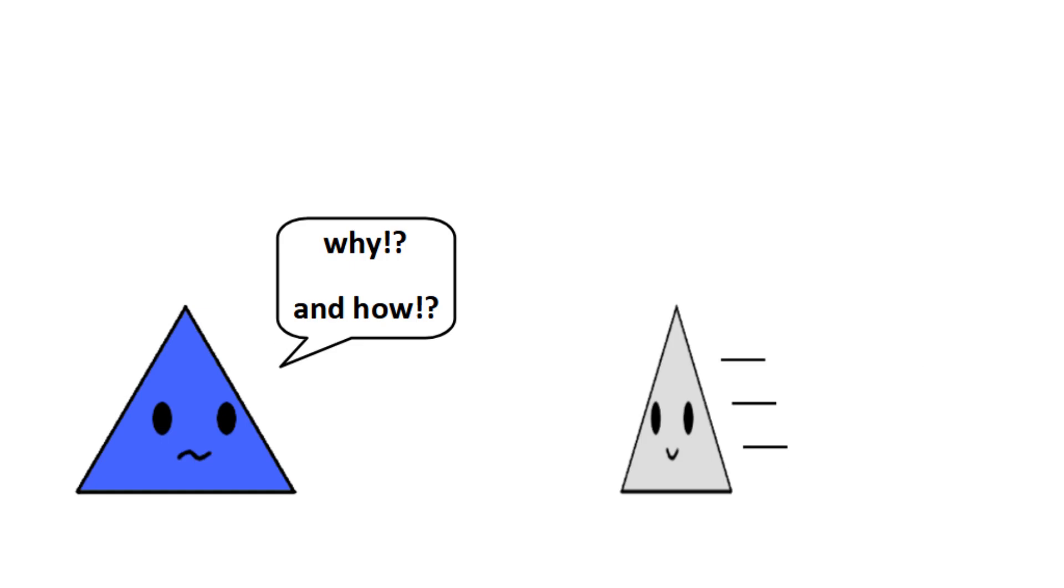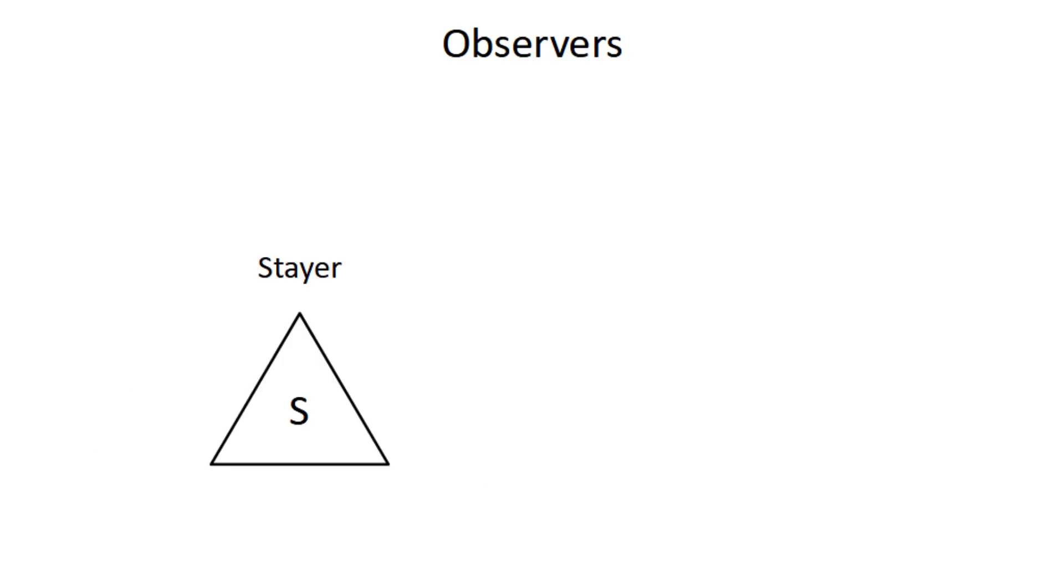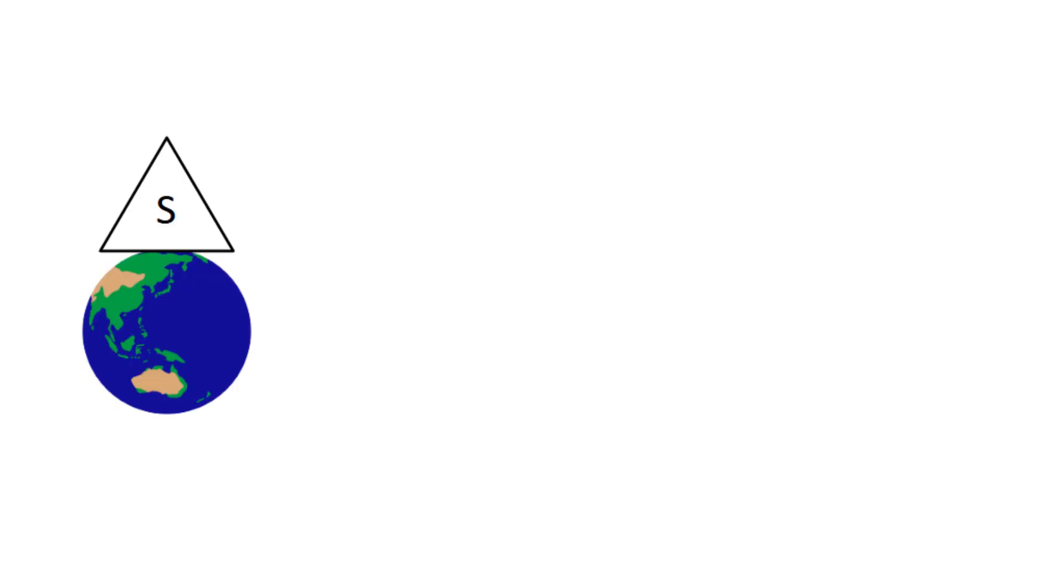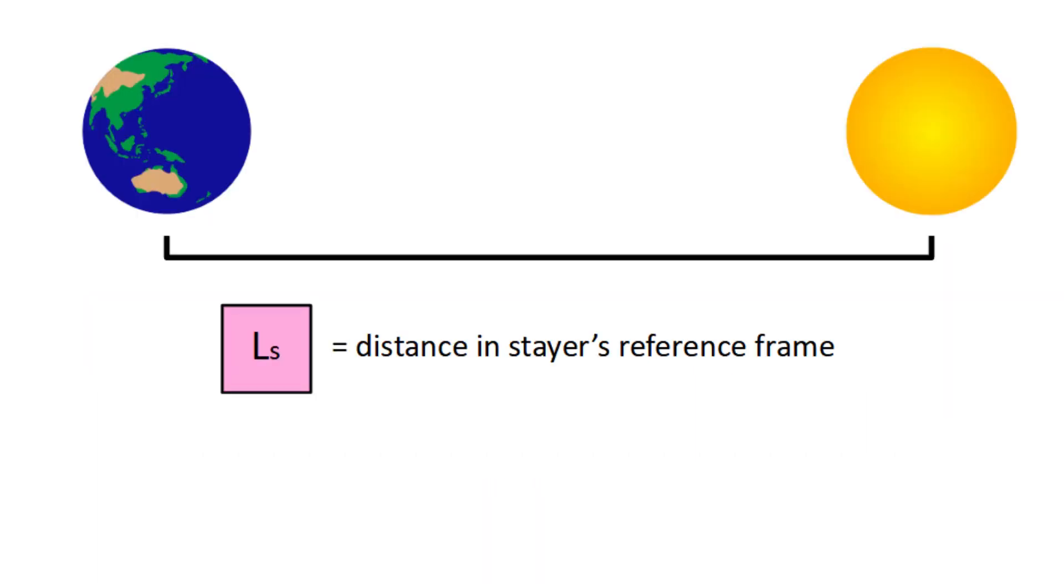Well, we're going to derive an equation for it using the following situation. Imagine there are two observers, stair and mover. The stair stays on earth, and the mover takes off in a spaceship at velocity v. This time, though, there's actually a destination. We'll just say it's a star some distance away, and we'll represent this distance with the variables. Ls is the distance in the stair's reference frame, and lm is the distance in the mover's reference frame.